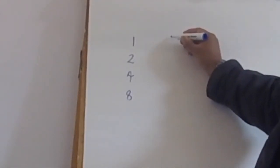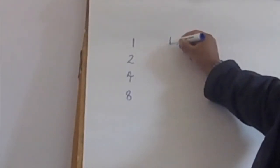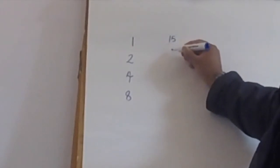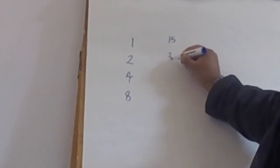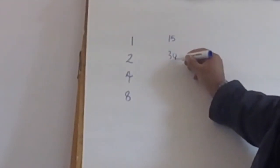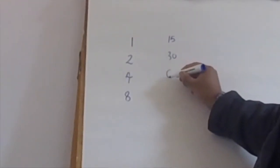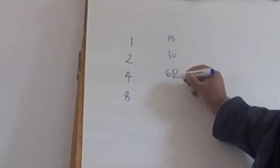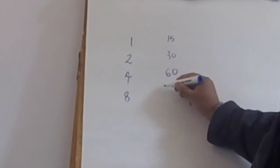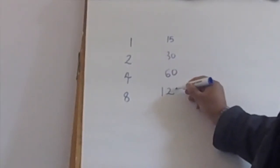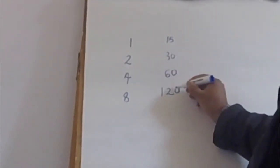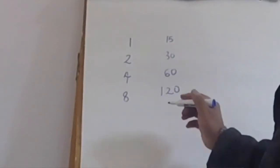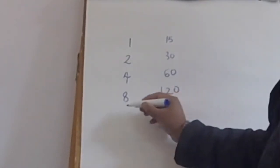The next thing you do is ask: what's double of 15? Thirty. What's double of thirty? Sixty. What's double of sixty? One hundred and twenty.